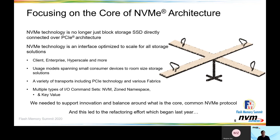What is key to our architecture is with command sets. We have I/O command sets — the NVM command set — and as we've discussed over the last year, we're introducing the zone namespaces command set and the key value command set. There are others that potentially will come as well, and this is an area where there probably is going to be innovation. We needed to look at where this innovation is going to come from and how do we balance what is core versus where we need to allow innovation to occur.